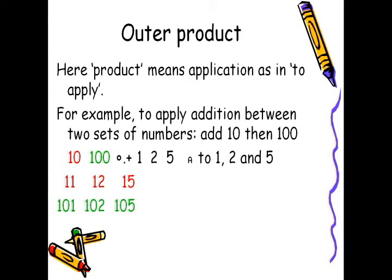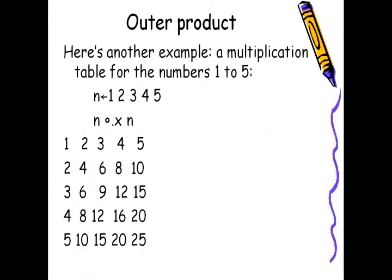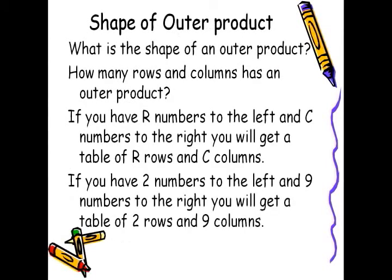The jot symbol can be entered with CTRL-J. Here's another example: a multiplication table for the numbers from one to five. I set n to the value one, two, three, four, five, and I apply outer product from n to n — n jot dot product n — and I get a table of five rows and five columns. The shape of an outer product is given by the number of elements on the left argument and the number on the right argument. So if I have two numbers on the left and nine on the right, I will get a table of two rows and nine columns.